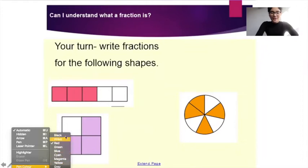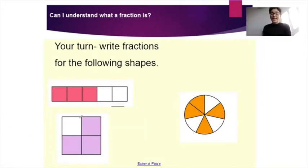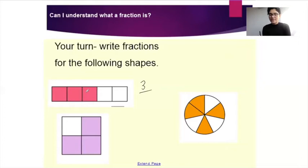Let's go through our answers to see if we have the same answer. So for this first shape, I'm going to see how many have been shaded — that's one, two and three. So that's my numerator, three. And how many parts do I have in total? One, two, three, four, five — so that is five in total. So the fraction would be three out of five.